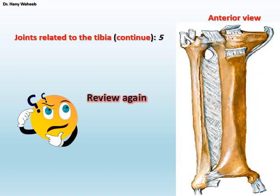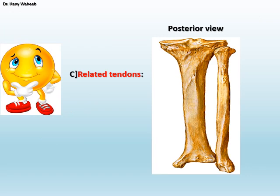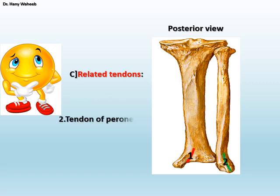Dear students, review again: for each of the five joints, name the marked joint and mention its type. Related tendons include: 1. Tendon of tibialis posterior, related to a groove on the back of the medial malleolus of the tibia; 2. Tendon of peroneus brevis, related to a groove on the back of the lateral malleolus of the fibula.